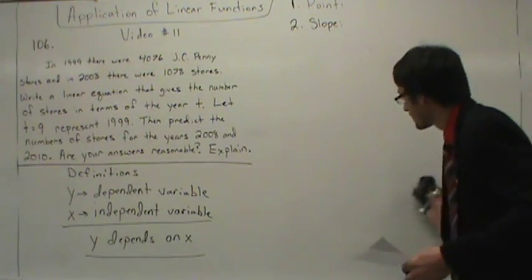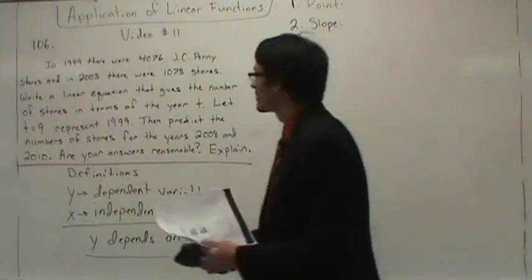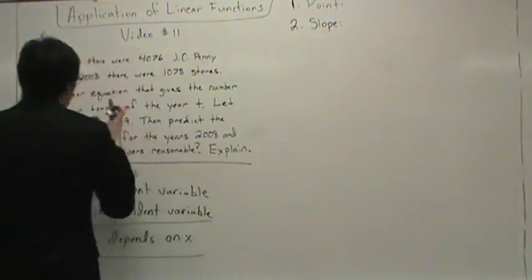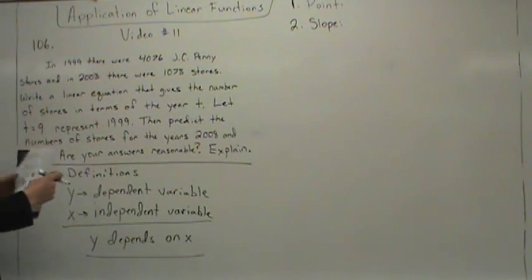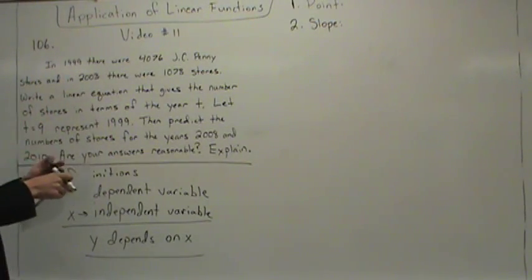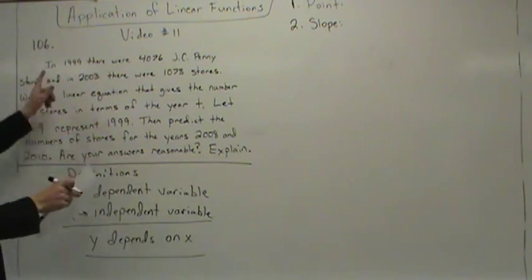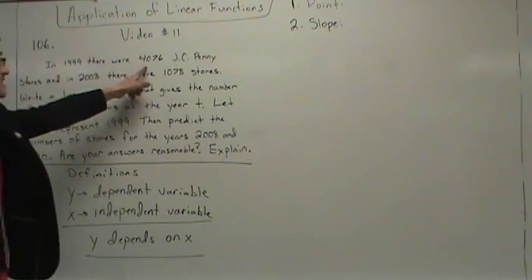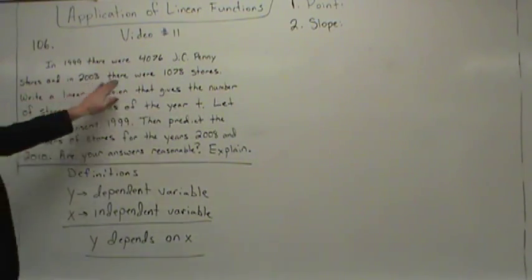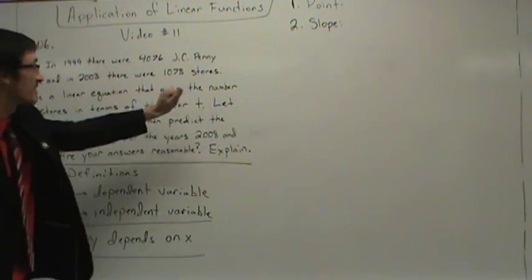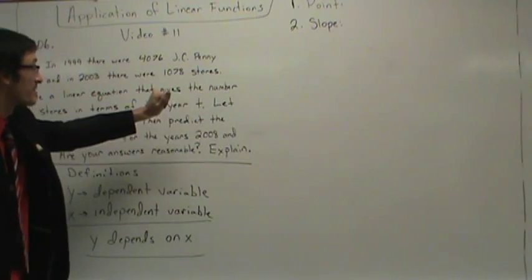Let's look at the problem and read it. In 1999, there were 4,076 JCPenney stores, and in 2003, there were 1,078 stores. It says: write a linear equation that gives the number of stores in terms of the year T, let T equal 9 represent 1999, then predict the number of stores for the year 2008.